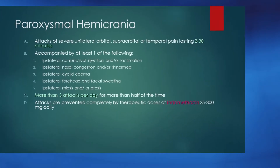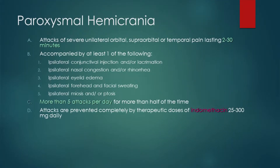Hemicranias are divided into paroxysmal and continuous types. Paroxysmal hemicranias are somewhat similar to cluster in terms of pain but tend to be briefer — only 2 to 30 minutes — but more frequent. Cluster patients may have 5 to 8 episodes per day, while paroxysmal hemicrania patients can have up to 20 or more. They are more common in women than men and respond specifically to indomethacin — in fact, response to treatment is part of the diagnostic criteria.